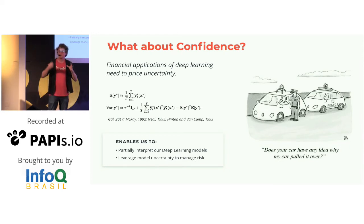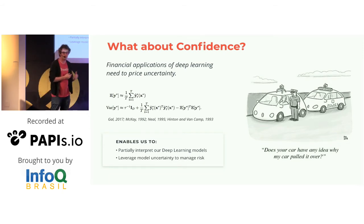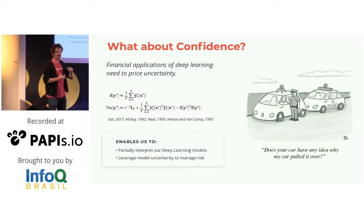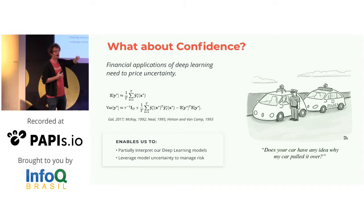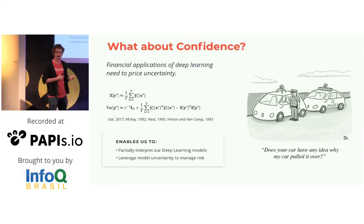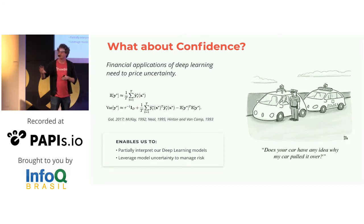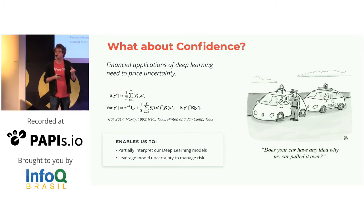Deep learning, while differentially outperforming most methods, only produces point-wise estimates — it doesn't out of the box give you any understanding of possible outcomes for that estimate, or even how confident the model is about a given estimate. Bayesian deep learning is an attempt to interpret and leverage the skills that Bayesian statistics have, applied in a deep learning context.